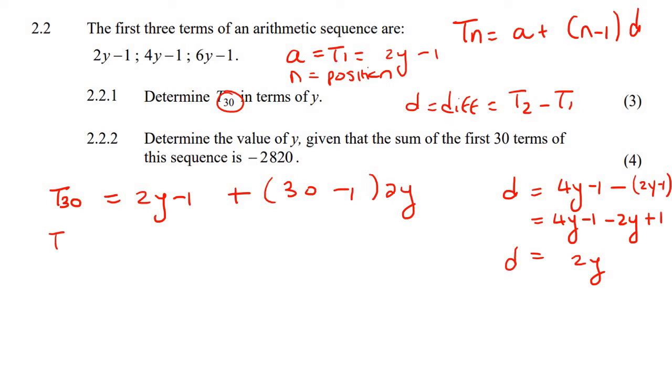Now we're going to just say that term 30 is equal to 2y minus 1 plus 29, because that's what 30 minus 1 becomes, times 2y. And so if we carry on, we're going to end up with 2y minus 1 plus 58y.